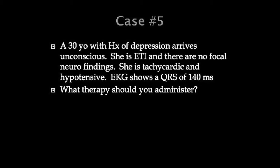A 30-year-old with a history of depression arrives unconscious, is endotracheally intubated, with no focal neurologic findings, tachycardic and hypotensive. EKG shows a QRS of 140 ms. What therapy should you administer? Tricyclic antidepressants — these drugs have made a comeback but at lower doses than in the 1980s. The big thing to watch for is the QRS widening. Normally QRS is less than 100 ms. Greater than 100, you worry about this toxicity; greater than 120, you worry a lot.